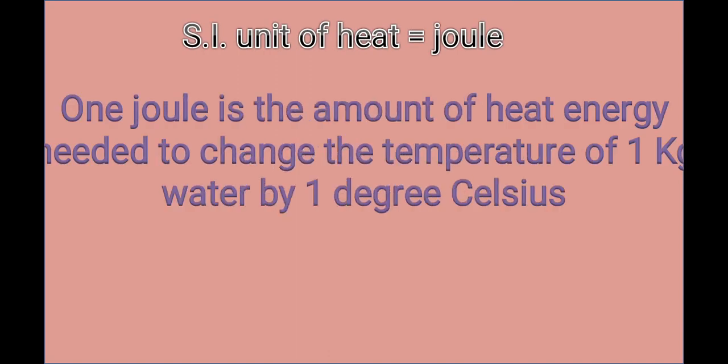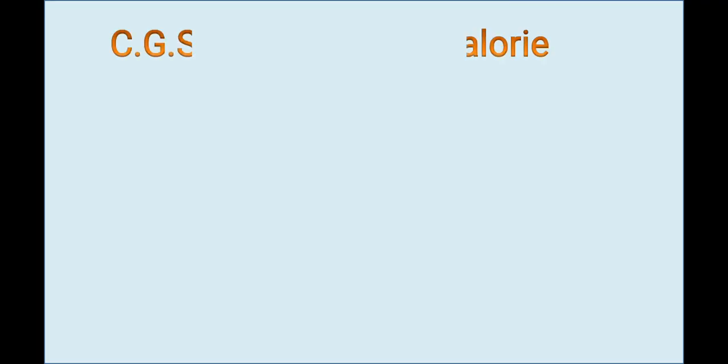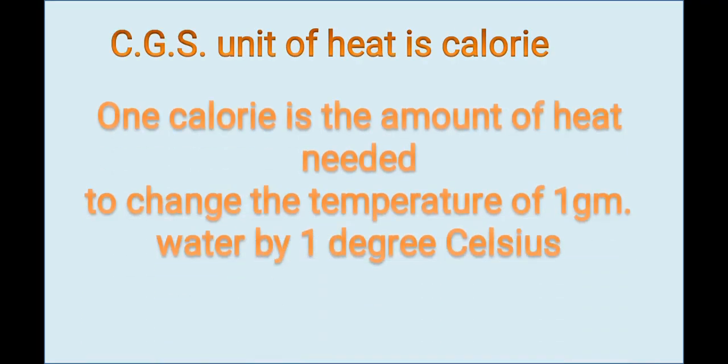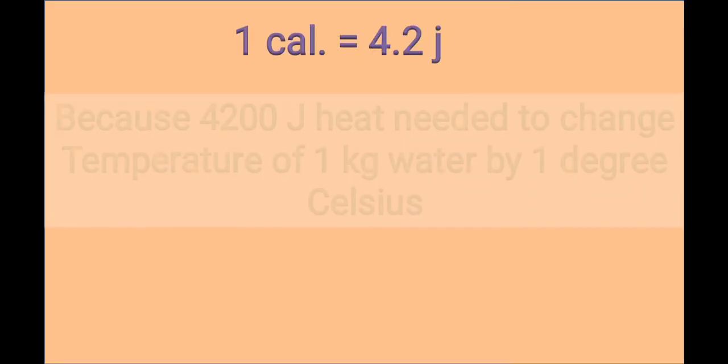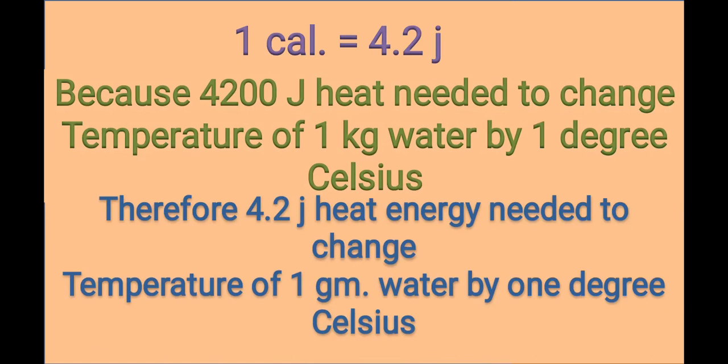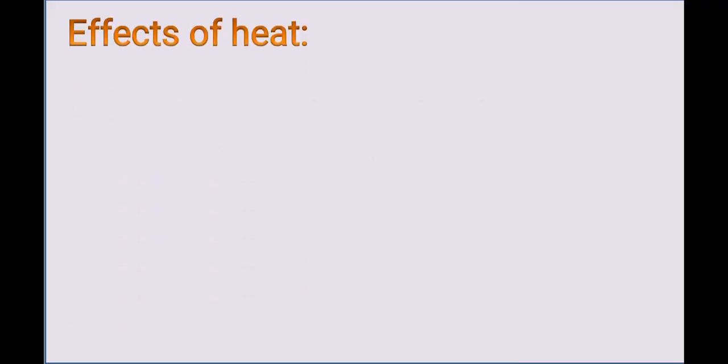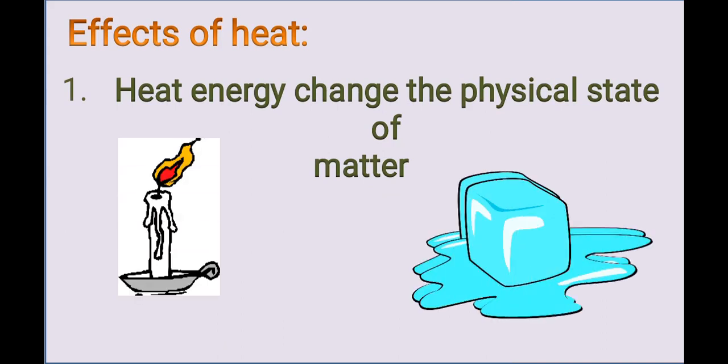The SI unit of heat is joule. One joule is the amount of heat energy needed to change the temperature of one kg of water by one degree Celsius. The CGS unit of heat is calorie. One calorie is the amount of heat energy needed to change the mass of one gram of water by one degree Celsius. One calorie equals 4.2 joule, because 4200 joule of heat energy is needed to change the temperature of one kg of water by one degree Celsius.